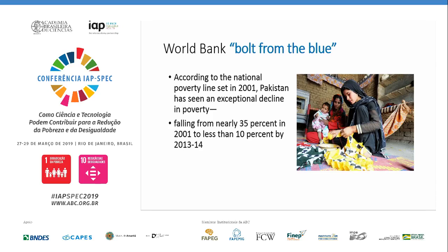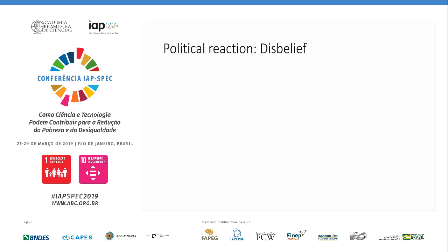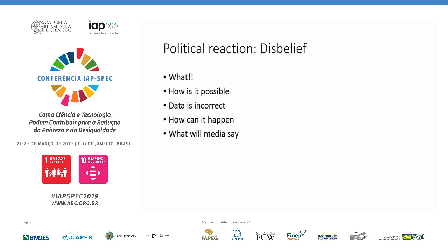Then there was this bolt from the blue: someone from the World Bank did a survey and found an exceptional decrease in income poverty in Pakistan — it fell from 35% to 10% or less. Everybody went into disbelief — this can't happen, how can it be? So there was a report published and political reaction of disbelief. The political government could not believe poverty had gone down that rapidly, and they said if we showcase it, the media will come back and say we are lying.